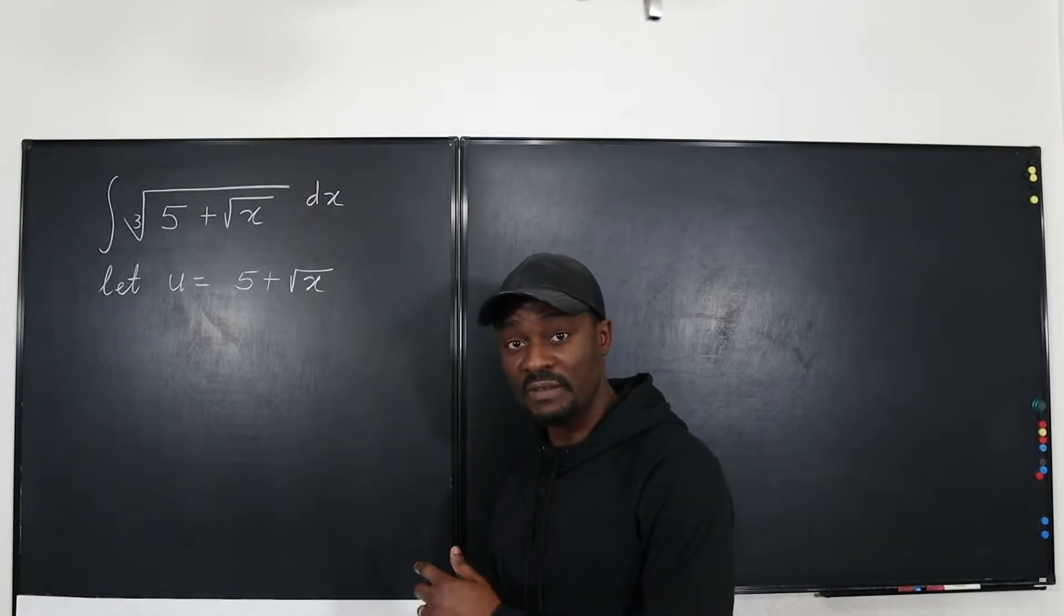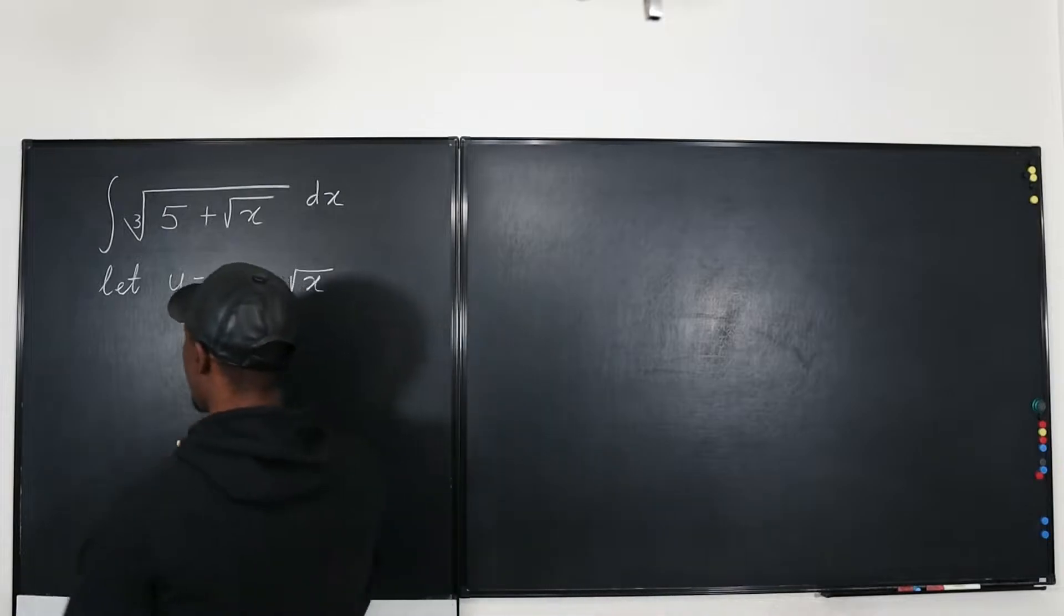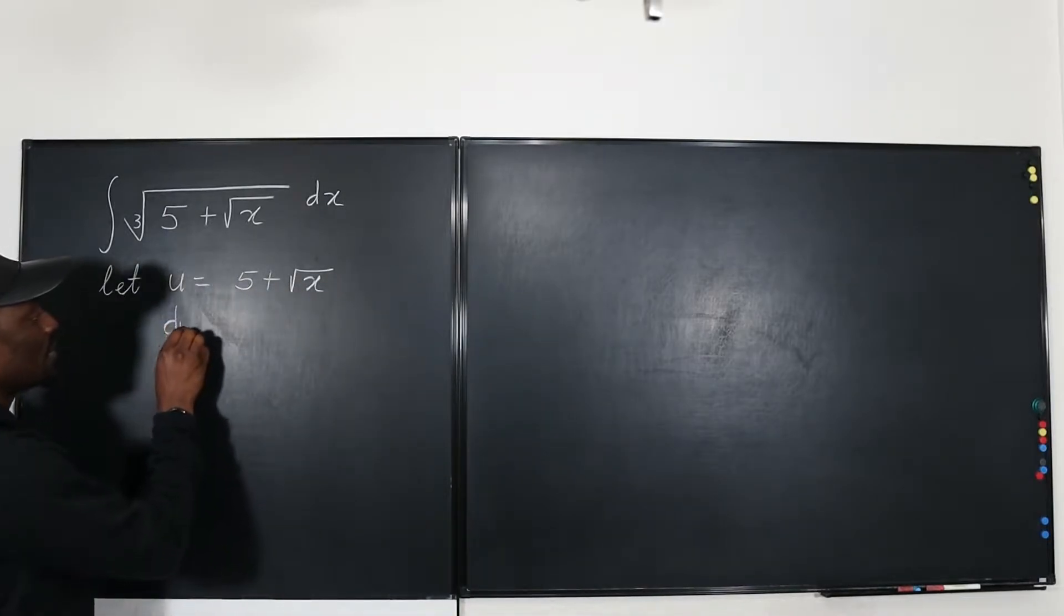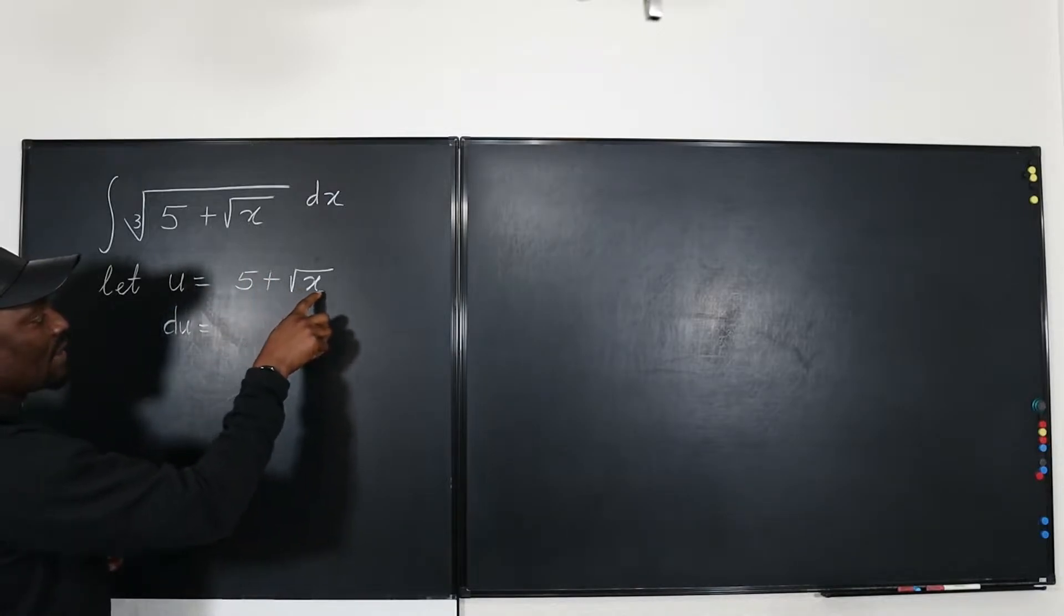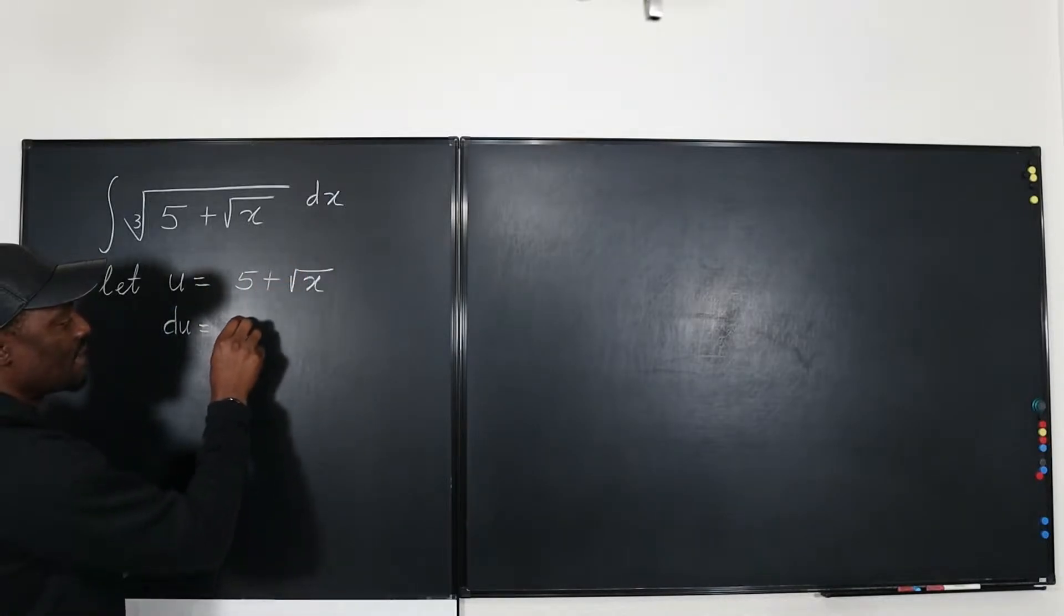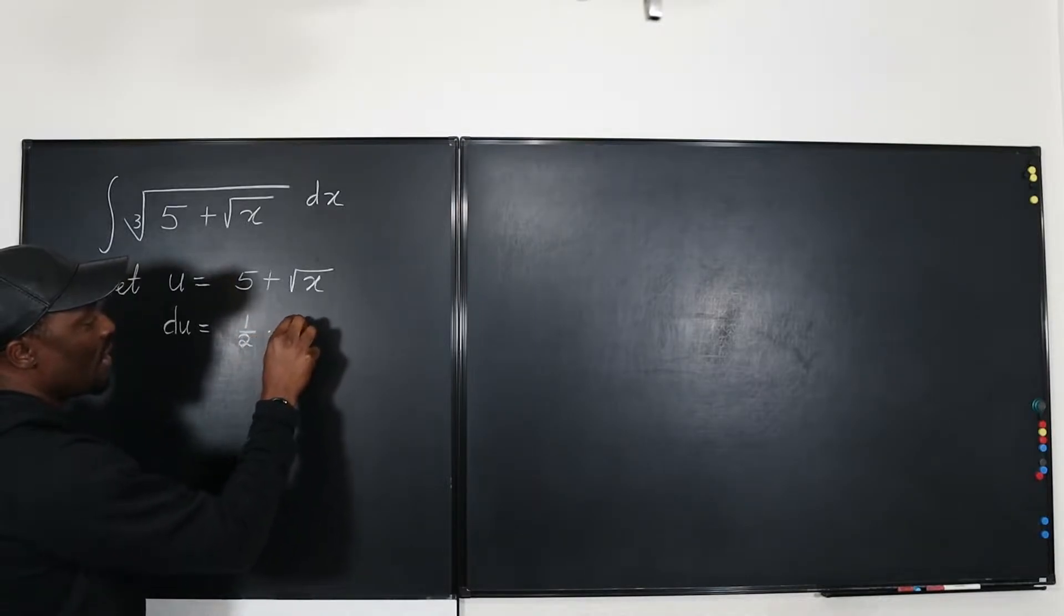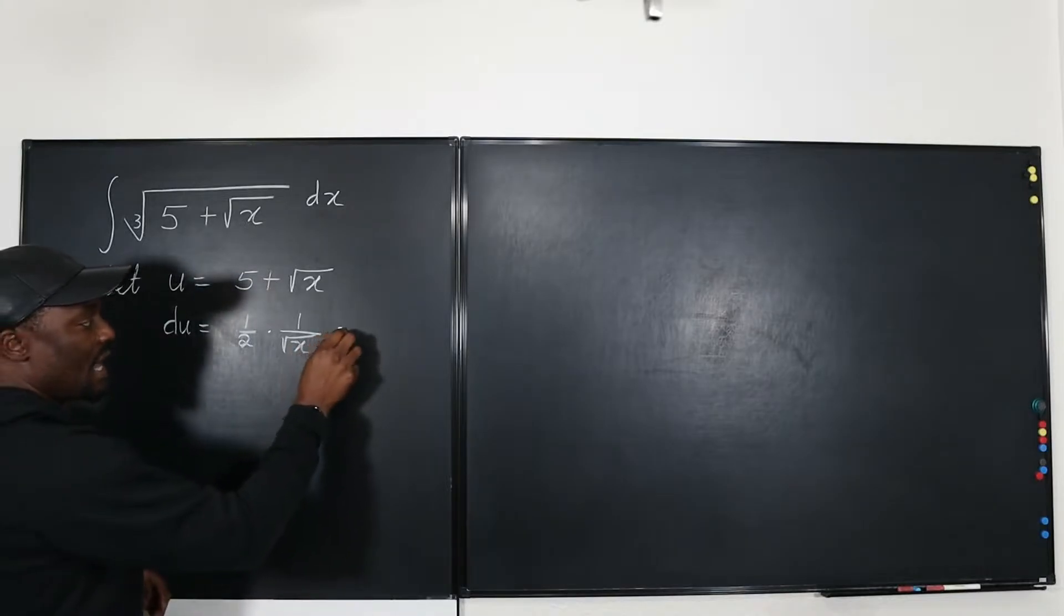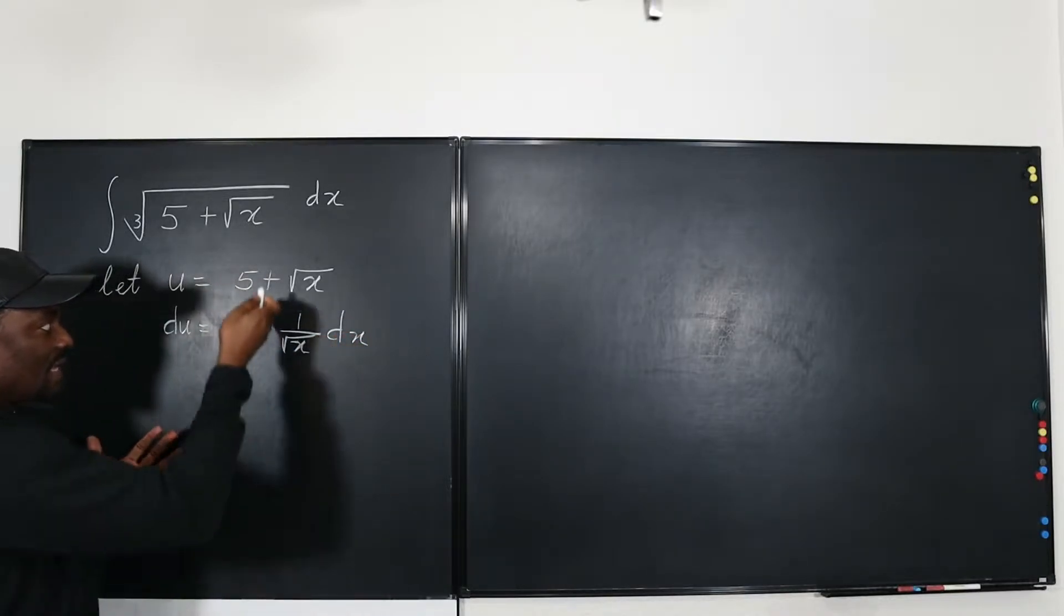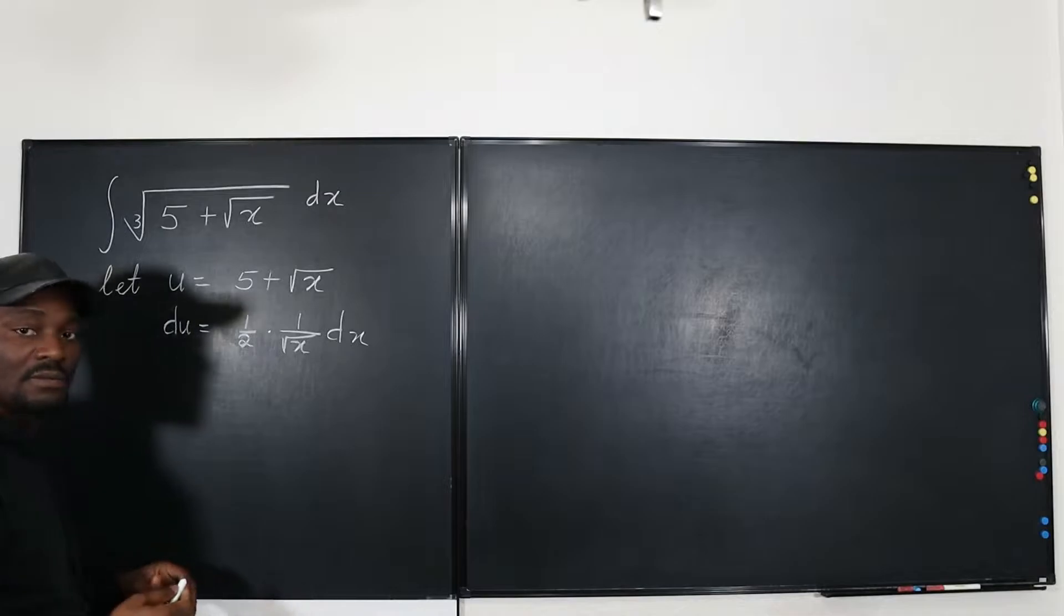So let's take the derivative of u and see what we get. So we know that du is going to be - this is going to go to zero and the derivative of square root of x is one half of one over square root of x, dx. So that's the derivative, that's du.